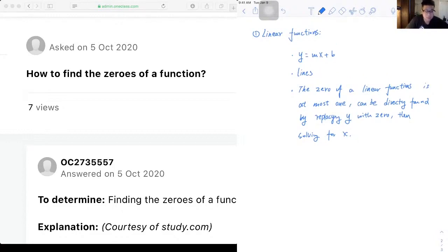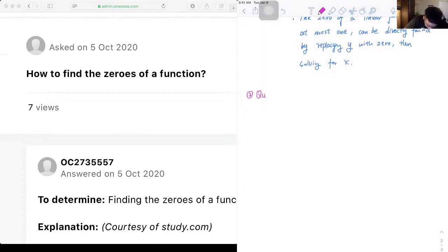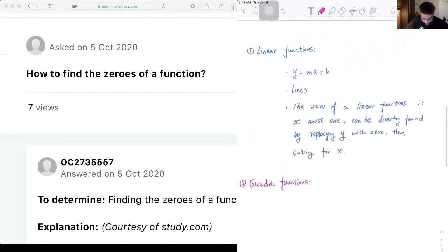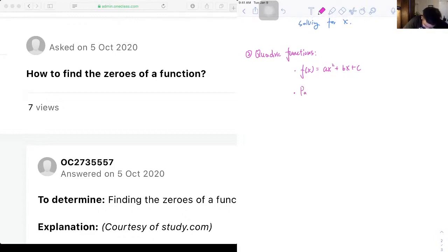And then if we are given a quadratic function, let's use another color. Quadratic functions. These are functions that can be put into the standard form which is given by f(x) equals ax squared plus bx plus c.